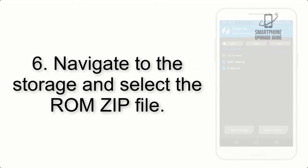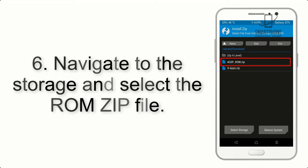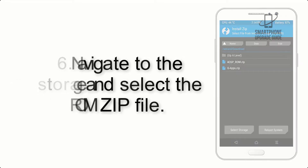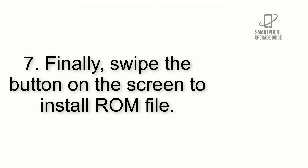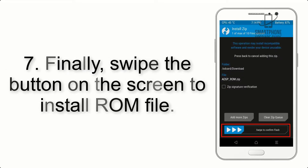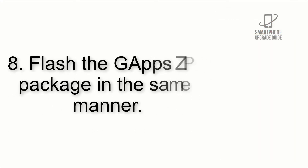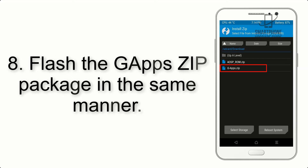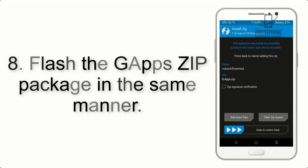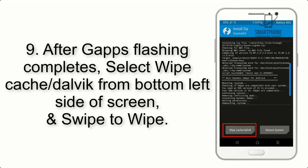Step 5: Go back to the recovery main screen and tap on the Install button. Step 6: Navigate to the storage and select the ROM zip file. Step 7: Swipe the button on the screen to install the ROM file.